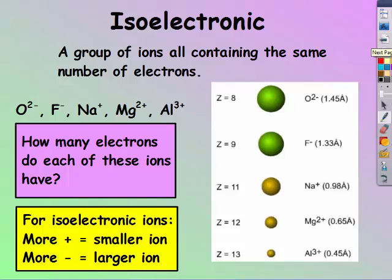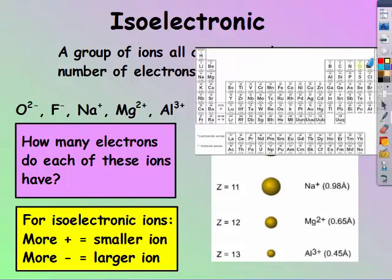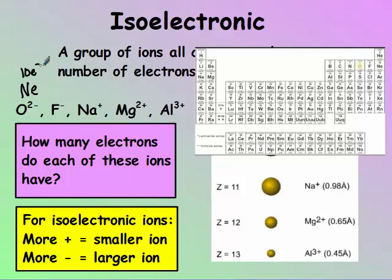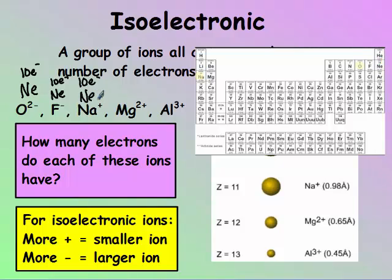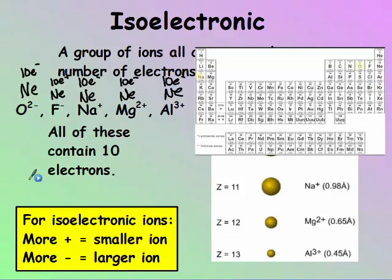Finally, isoelectronic deals with a group of ions all containing the same number of electrons. O negative two has ten electrons, which is the same as neon. Fluorine minus one has nine electrons, gains one, so it also has ten electrons. Na plus one started with eleven but lost an electron, giving it ten. Magnesium plus two has ten, and aluminum, if it loses three, it has ten electrons. So all of these ions have ten electrons.